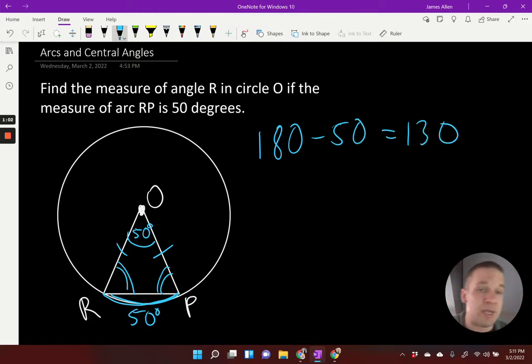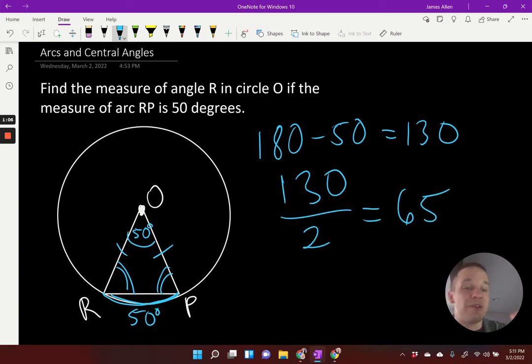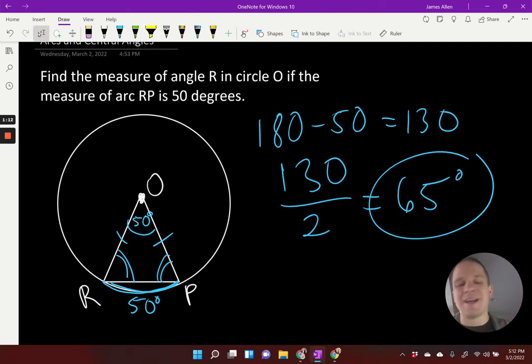Now if R and P have to be the same thing, that means I'm going to have to take 130 divided by 2, which gives me 65 for each. So 65 degrees, boom, that's my answer.